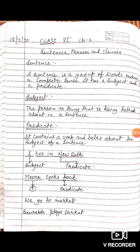Let's see the example first. 'I live in New Delhi.' Here, 'I' is the subject — jiske baare mein baat ho rahi hai. 'Live in New Delhi' is the predicate — it contains a verb and talks about the subject.